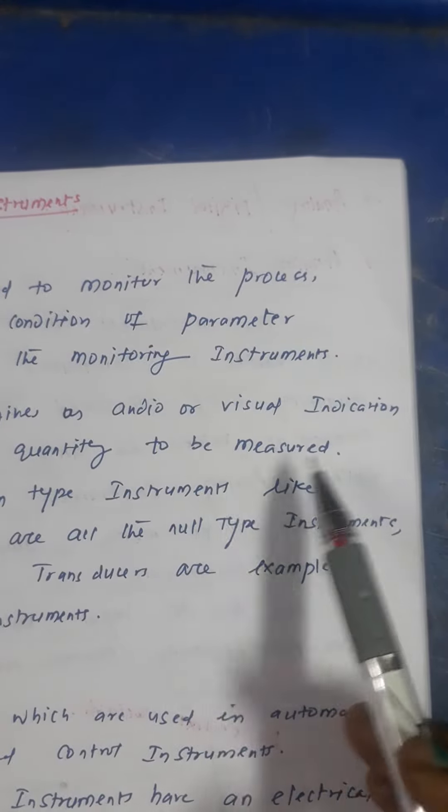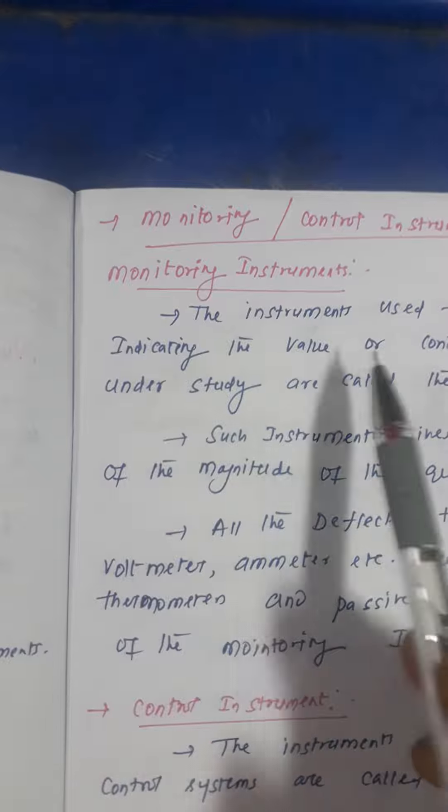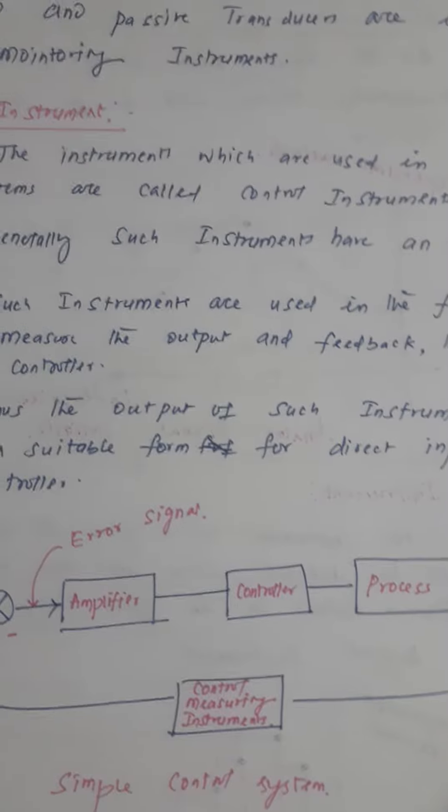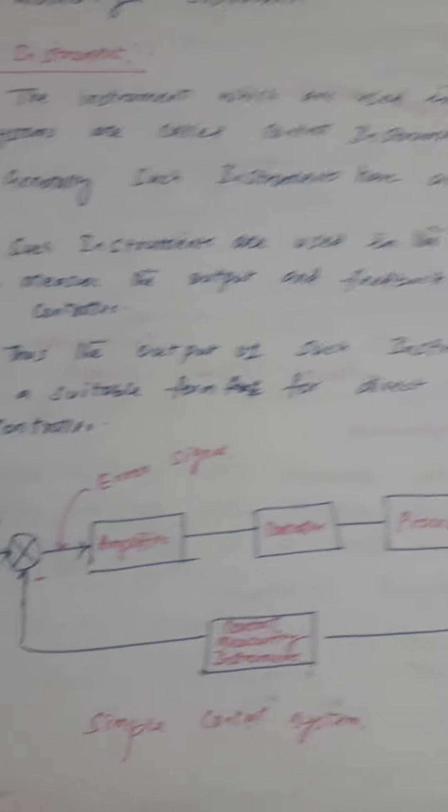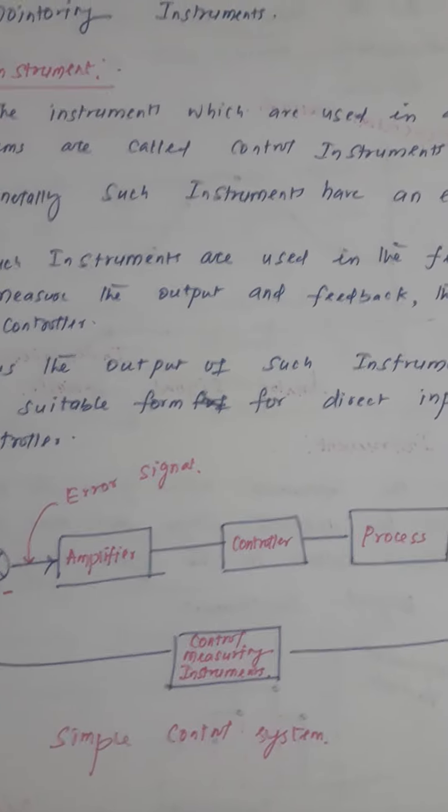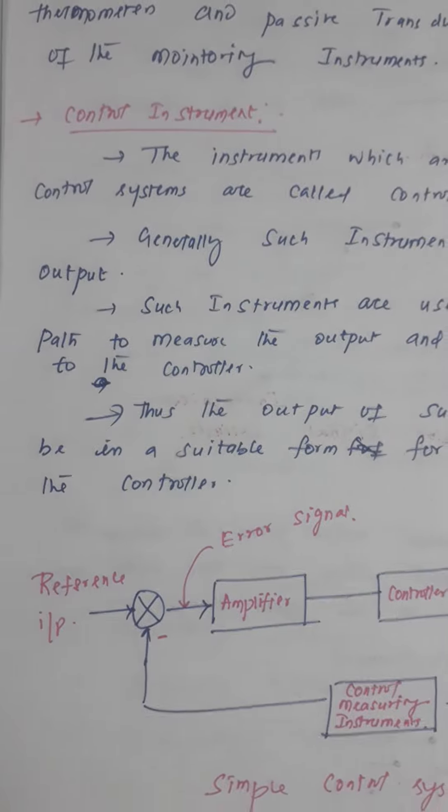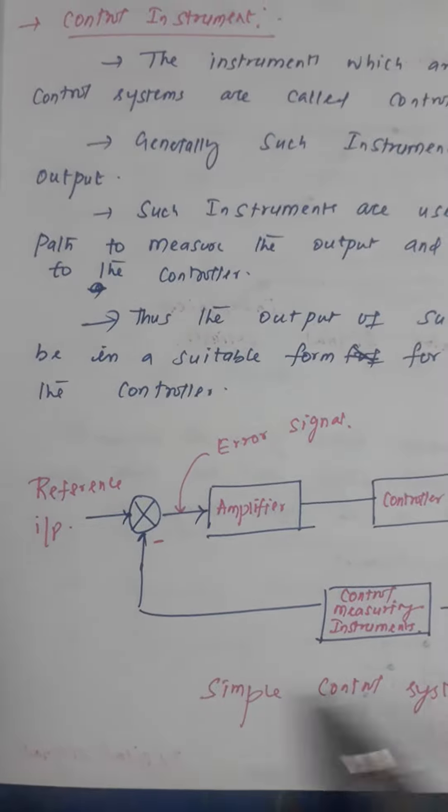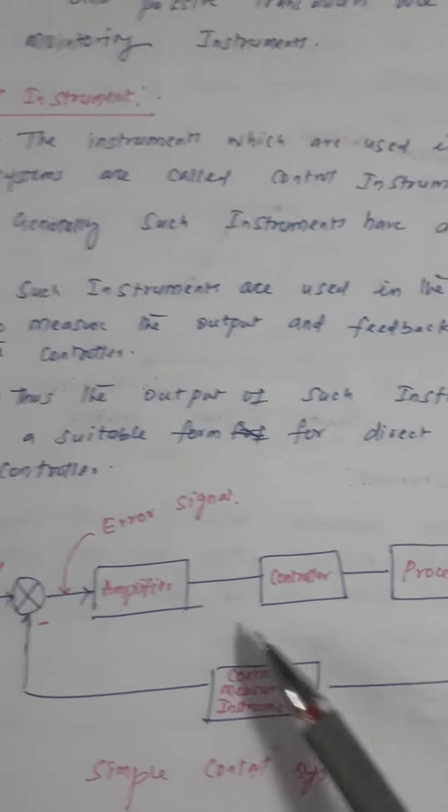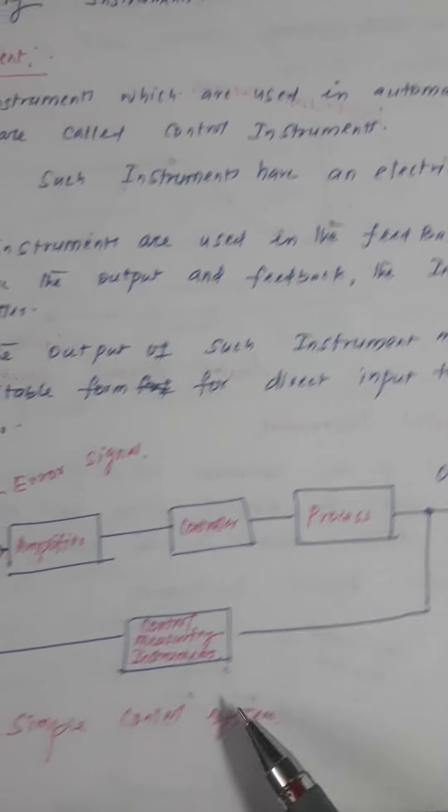Audio visual indication is made, that is your monitoring instrument. The other one is your control instrument. Control instrument is where the instrument is used for automatic control systems. This is your simple control system where the amplifier is there, controller is there, and process is there.